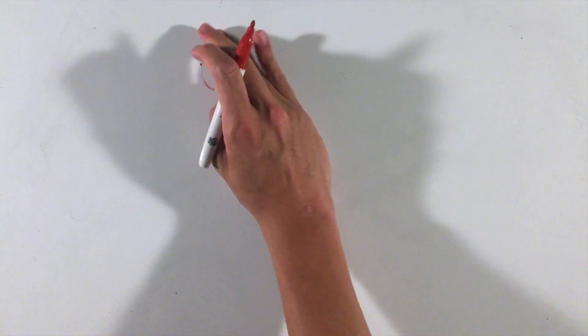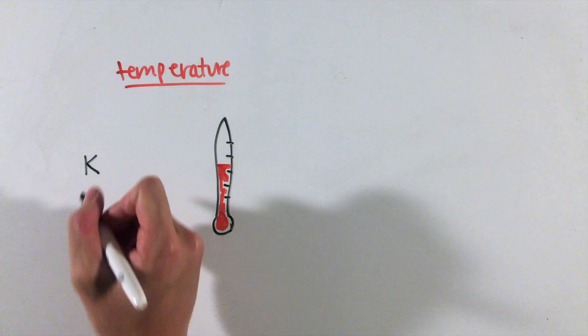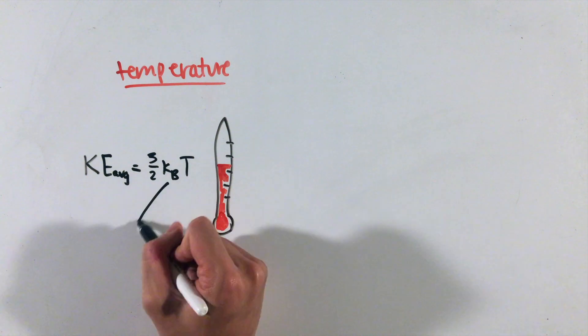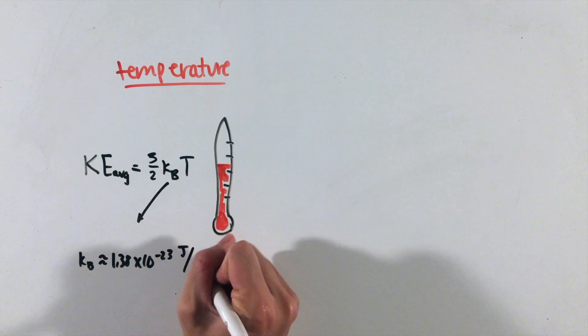One property of ideal gases is temperature, or a measure of the average kinetic energy of all the gas particles. While each gas particle technically moves at a different speed, the average kinetic energy is equal to 3 halves times the temperature times a constant known as Boltzmann's constant, which has a value given here.